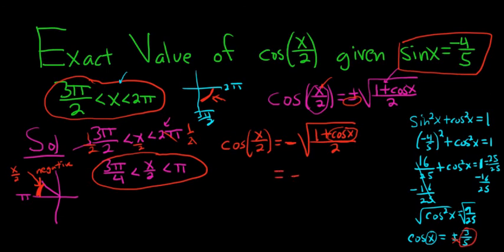Now back to our problem. We have negative square root of 1 plus 3 fifths, that's all over 2. To simplify this, we can multiply by 5 over 5 to clear the fraction.